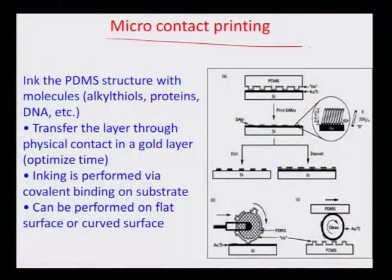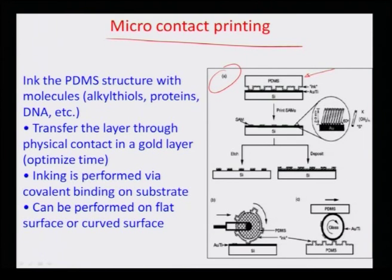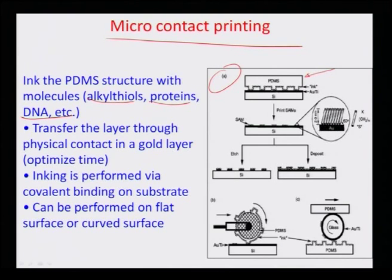The process starts with step A, where there is a piece of PDMS which has been replicated and molded. With the power of photolithography you can go very small — up to 10 micron by 10 micron features can be produced in the PDMS. This PDMS surface is then inked up, and the ink can be something like a self-assembled monolayer, alkyl thiols, proteins, DNA, and so on — whatever molecule you would like to ink on, you first ink onto the PDMS surface.